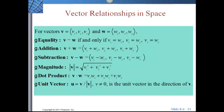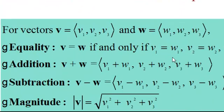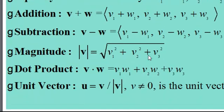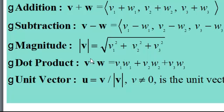Moving from two-dimensional to three-dimensional, many properties of vectors can be extended. When adding, we add the three components. Subtracting, we subtract the three components. Finding the magnitude: the square root of v₁² + v₂² + v₃². The dot product is the sum of the products of the x's, y's, and z's. The unit vector is the vector divided by its magnitude.